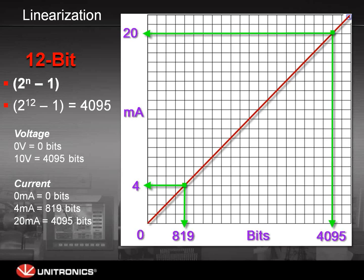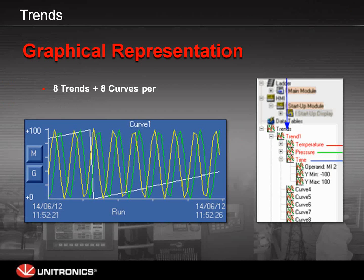The basic formula here: 2 to the n minus 1. If you have 12-bit, it's 2 to the 12th minus 1, which gives you 4,095 as the maximum value. So that's how you can always calculate it. But it can always be found in the spec sheet to make things easier.